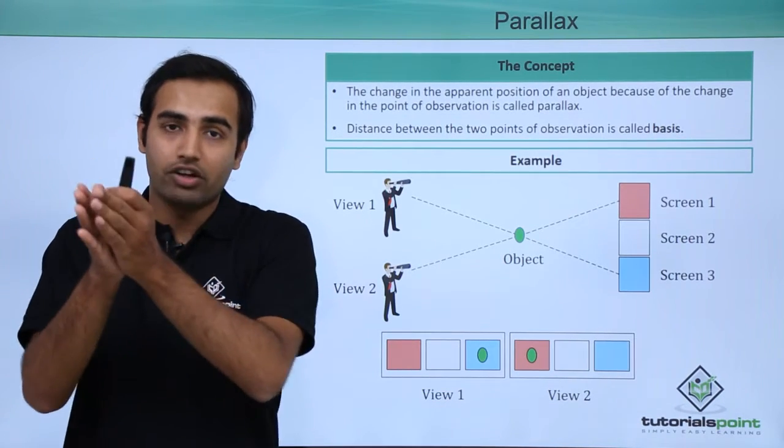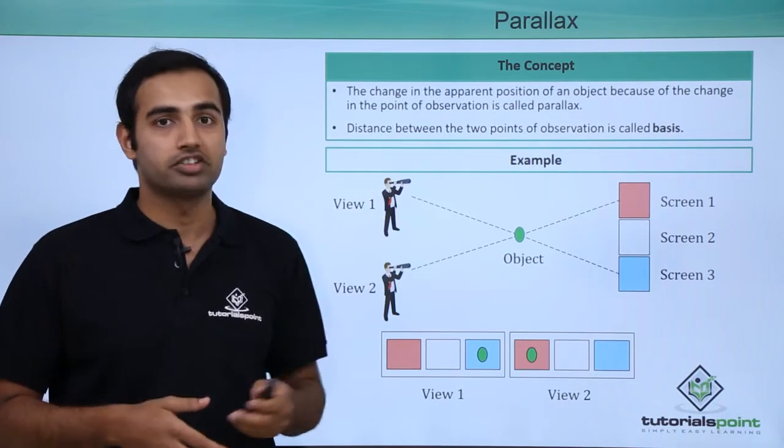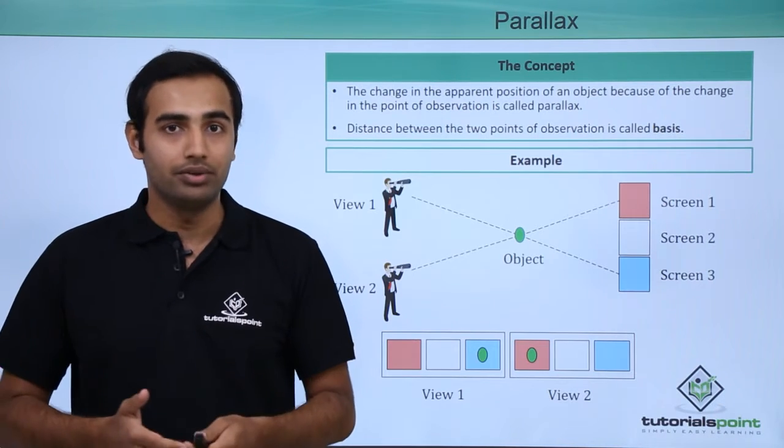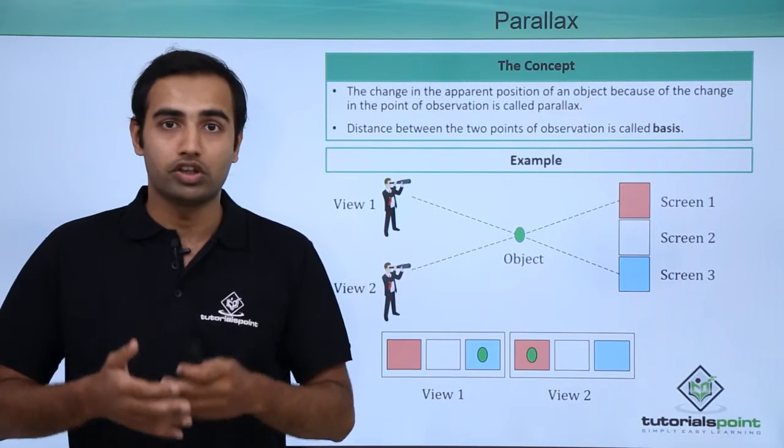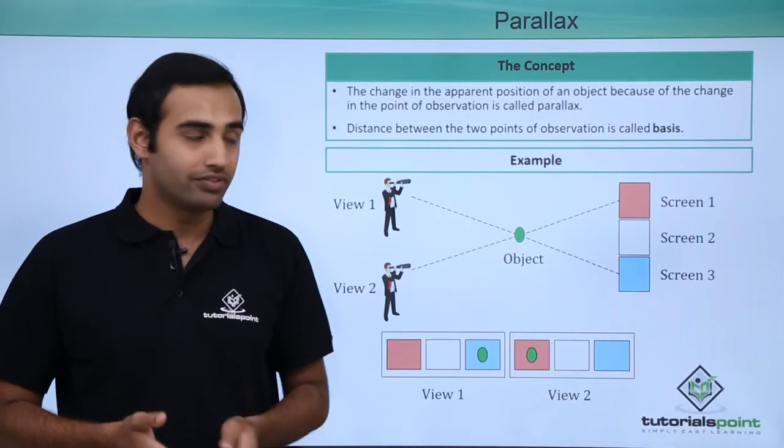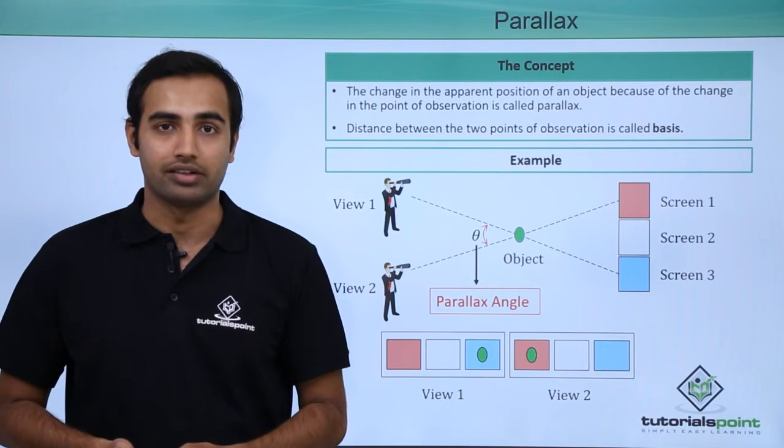This apparent change of background behind the object simply because the point of observation was changed, this phenomenon is called parallax. Now whenever we have two such observation points, the angle between them is called the parallax angle. So in this figure over here this angle theta will be called the parallax angle.